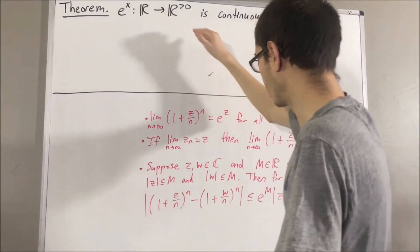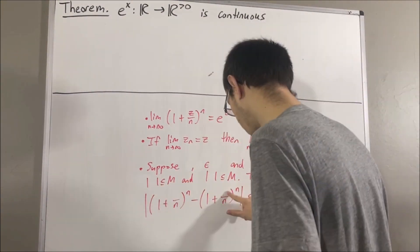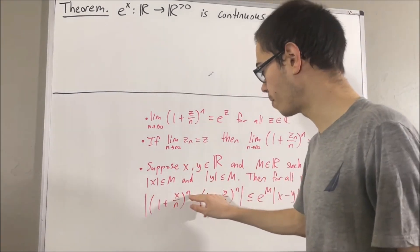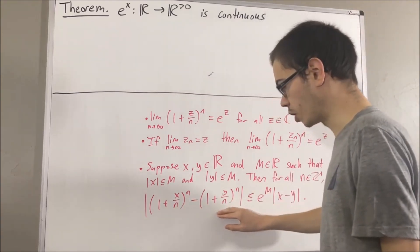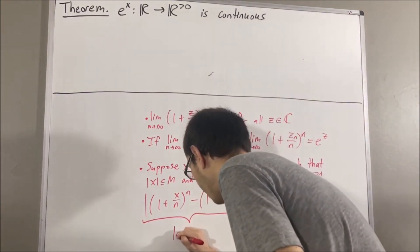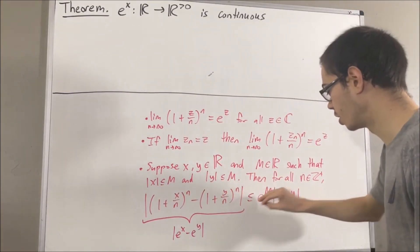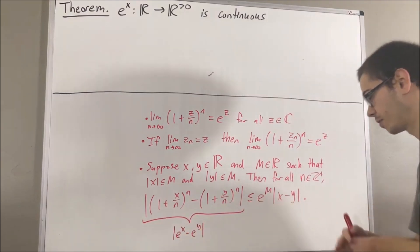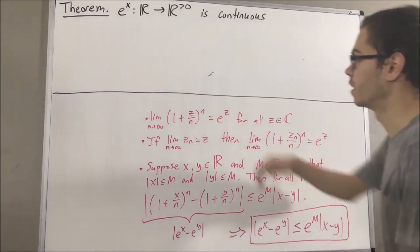Now, here we're only interested in real numbers, so I'm going to treat z and w as though they're real numbers and call them x and y. We know that (1 + x/n)^n converges to e^x, and (1 + y/n)^n converges to e^y. Therefore, the difference between these two sequences converges to e^x minus e^y, and so the absolute values converge to |e^x - e^y|. But every term of this sequence is less than or equal to a fixed value, and that implies the limit must also be less than or equal to that value. The idea is to use this fact to help prove that the exponential function is continuous.